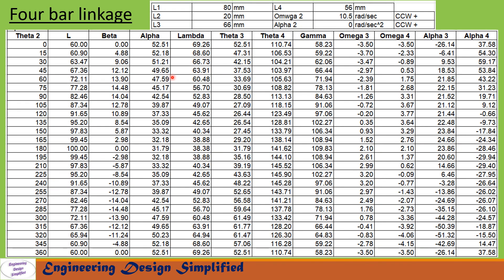Now let us solve the same problem from the previous two videos. The parameters are: L1 = 80 mm, L2 = 20 mm, L3 = 66 mm, L4 = 56 mm. ω2 = 10.5 rad/s counterclockwise (positive), and α2 = 0. The crank angle θ2 runs from 0° to 360° at intervals of 15°. Links for the position analysis video and velocity analysis video are given in the description box. Using the previously discussed equations, α3 and α4 are computed.